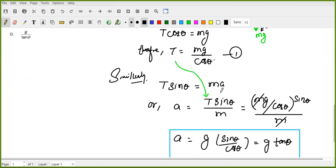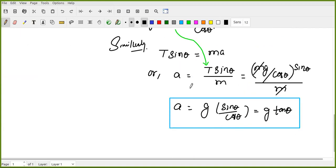T sin theta will be the mass into the acceleration. If we have to solve the acceleration value, T sin theta equals mass times acceleration. Mass cancels, acceleration is equal to g sin theta by cos theta, which is g tan theta.